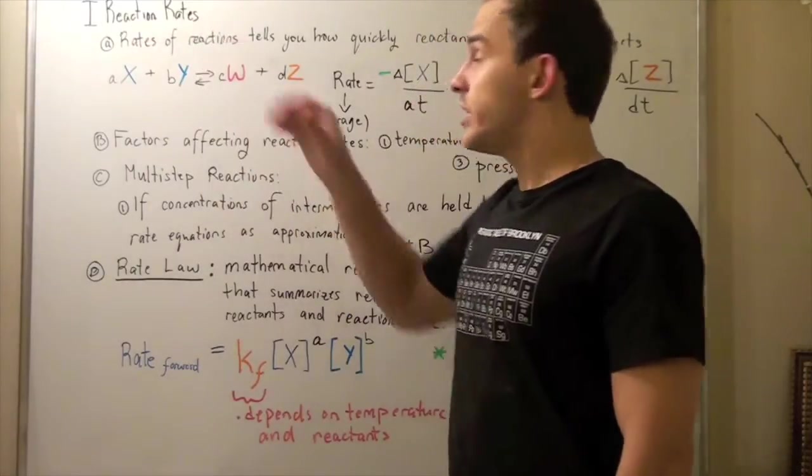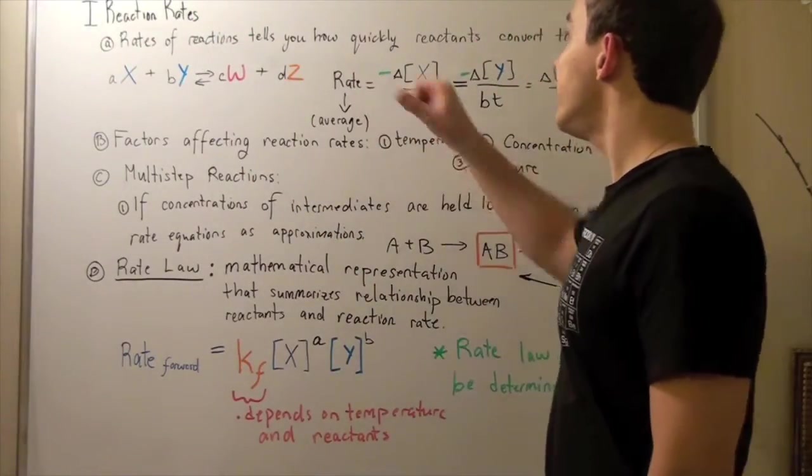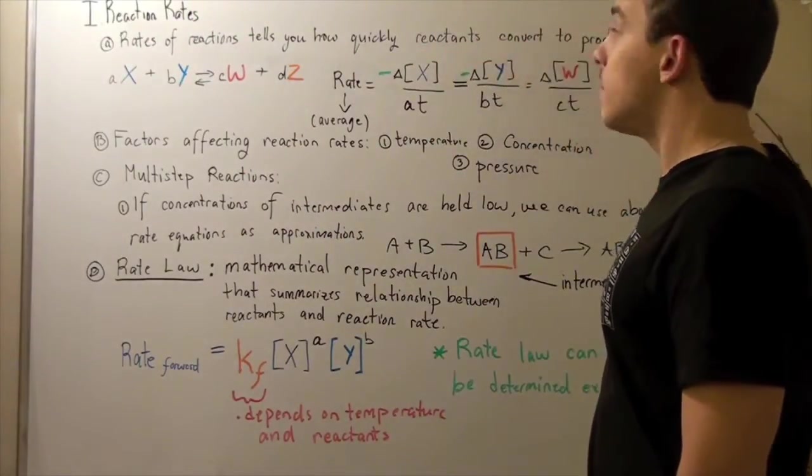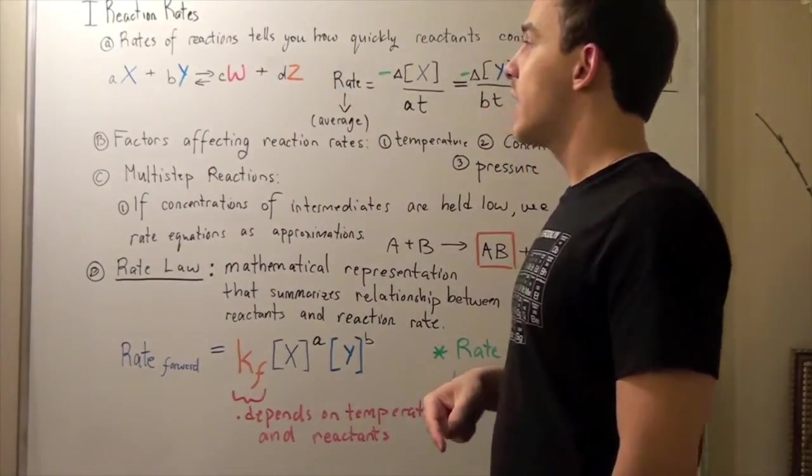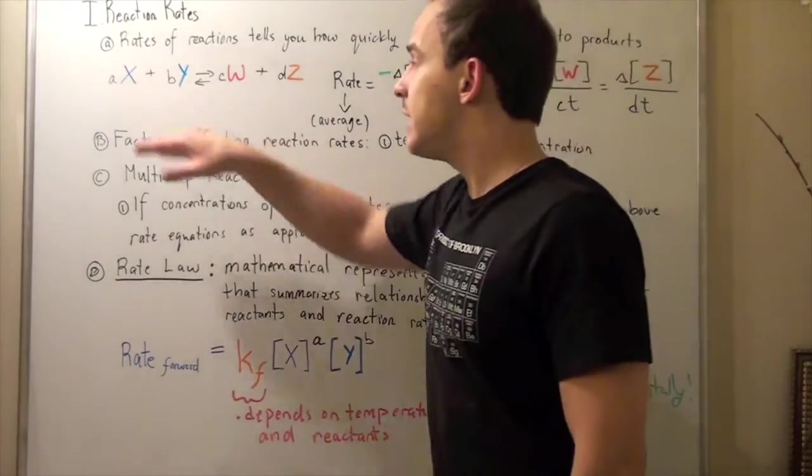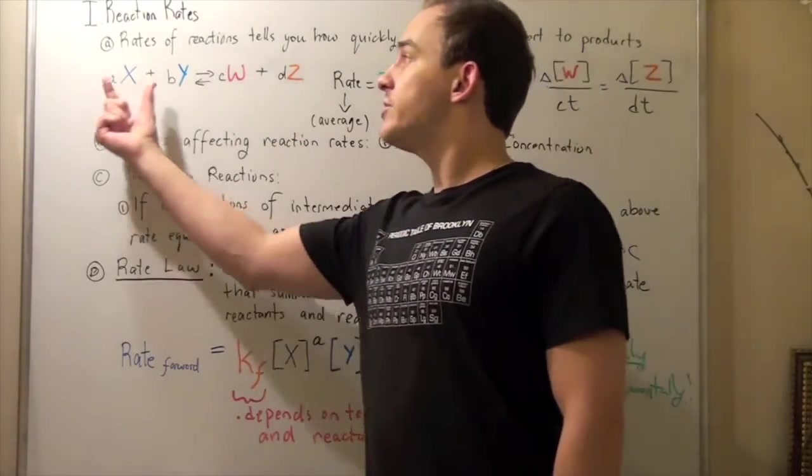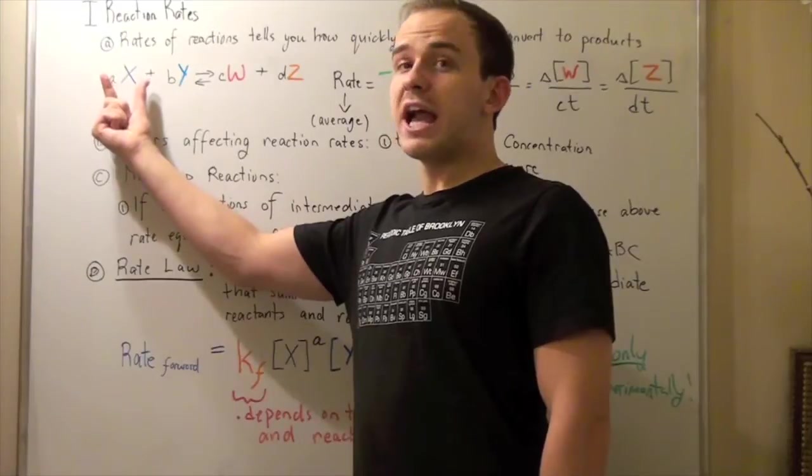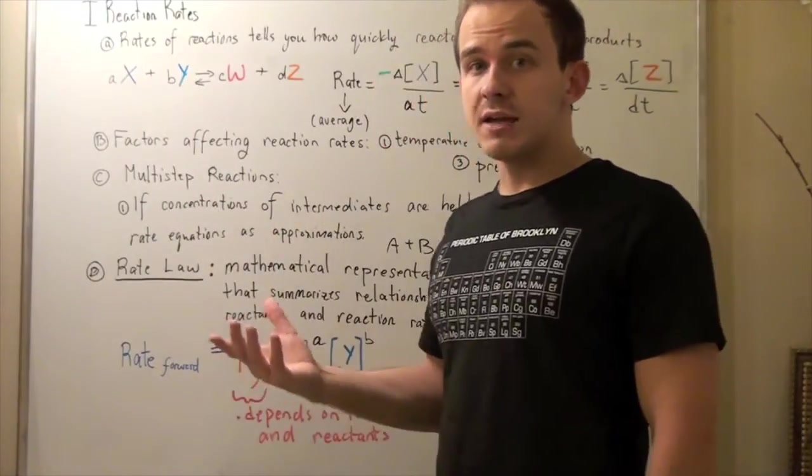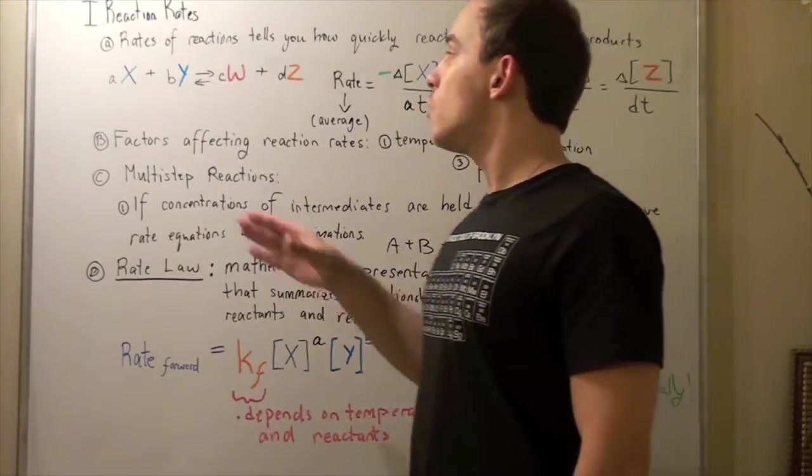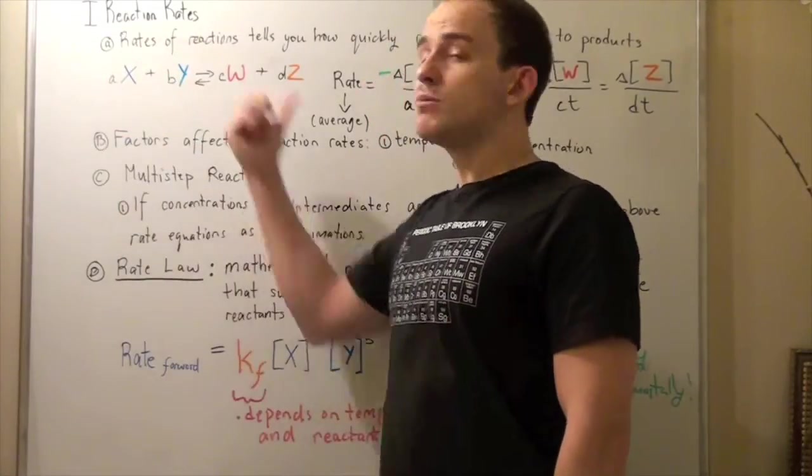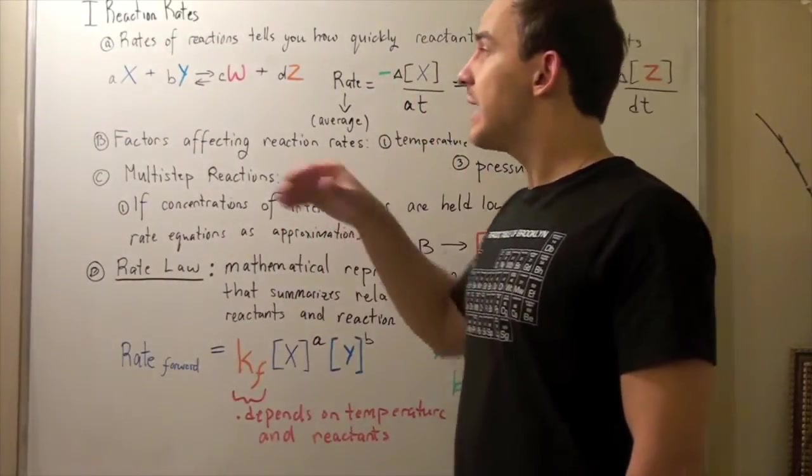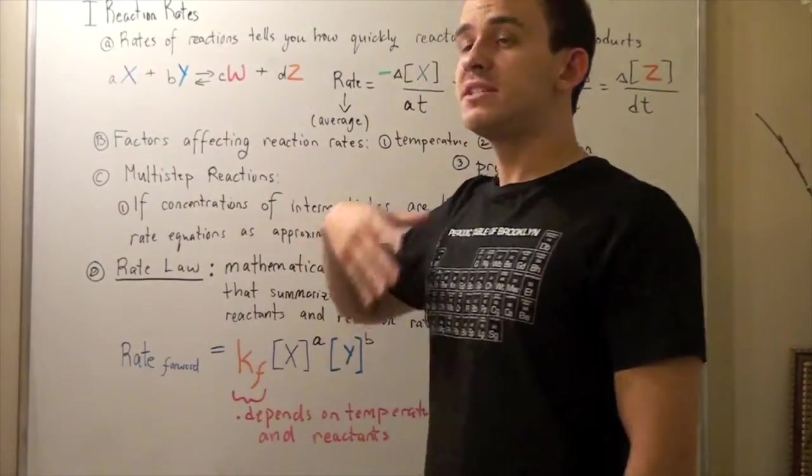Rates of reactions tell you how quickly reactants become products. So how quickly X and Y become W and Z. In other words, the rate can be found by the change in concentration of reactant over some given time. Notice that we go from a positive amount, or some amount, to a smaller amount. So over time, our X and Y will disappear.